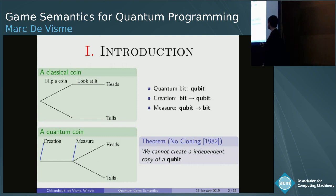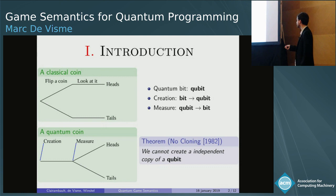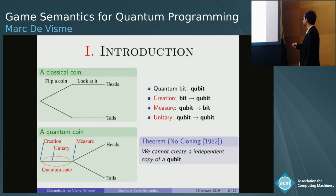The main difference between classical programming and quantum programming is that if you take a classical coin and flip it, it will be heads or tails, and if you look at it nobody will change. Whereas if you take a quantum coin, when you flip it, it will not yet be heads or tails, and the action of measuring it will fix it at heads or tails. In between it will be in a quantum superposition of state where you can do a lot of operations that are unique to quantum computation, that I call unitaries.